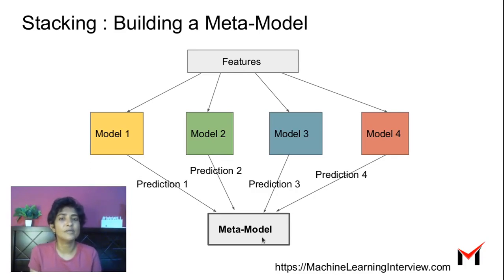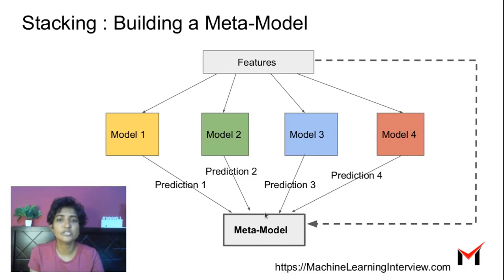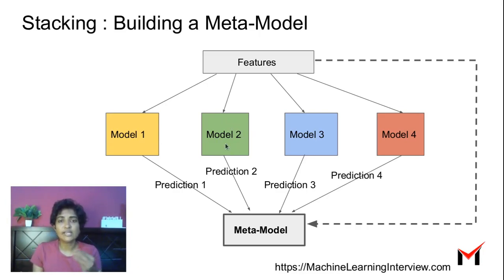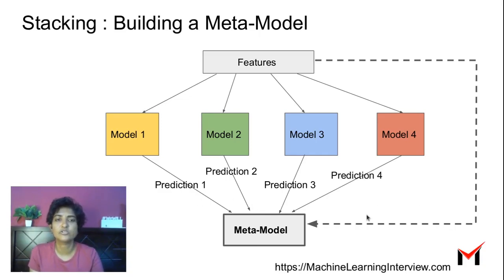The target variable for the meta model is the same as for the individual models — the original target variable. We can also augment the meta model by including the original input features alongside the model predictions. This gives it more context: for example, for some parts of the data where model one works well and others where model two works well, the meta model can learn to give more weight to the appropriate model based on the input features.